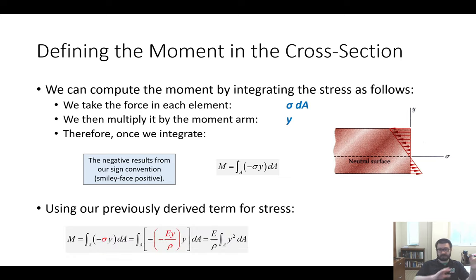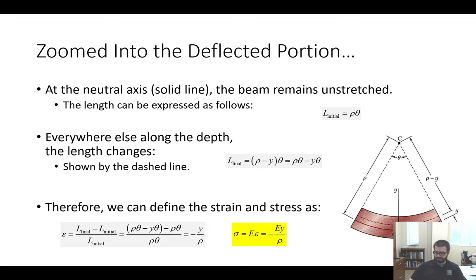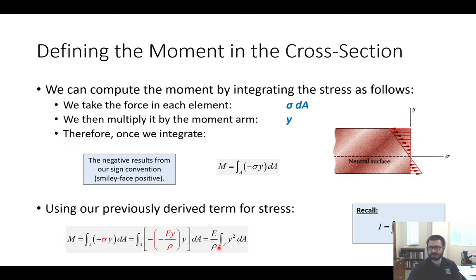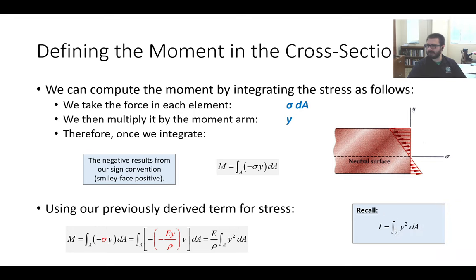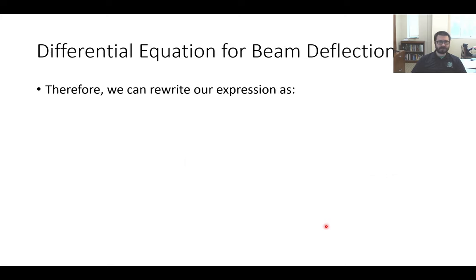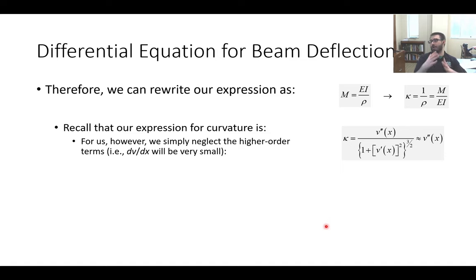That integral is just the moment of inertia I, so we can write M = E·I/ρ. Rearranging, we get what's called a moment-curvature relationship. But remember our assumption of small deflections: the first derivative of deflection v′(x) is a small number, so (v′)² is really small, and 1 plus a really small number raised to the three-halves power is essentially 1. So instead of using the full nasty curvature expression, we simplify: curvature ≈ the second derivative v″.